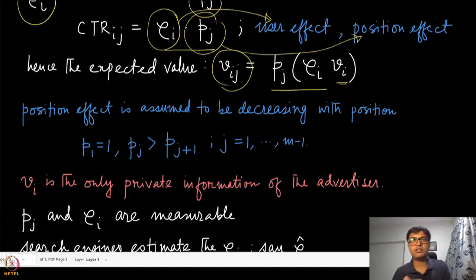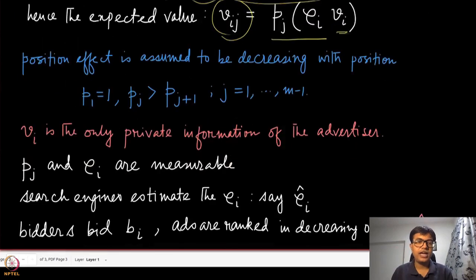We assume that the position effect is always decreasing with position. If the position is j, then it has a higher probability of getting a click than if the position is j+1, and so on.